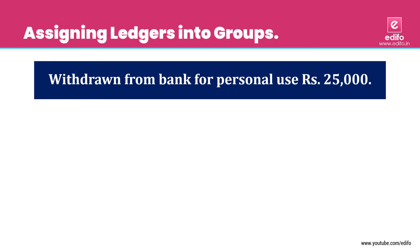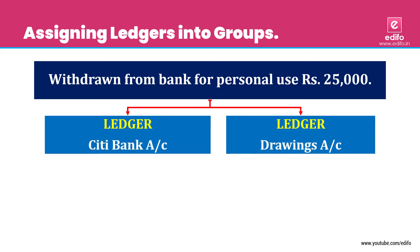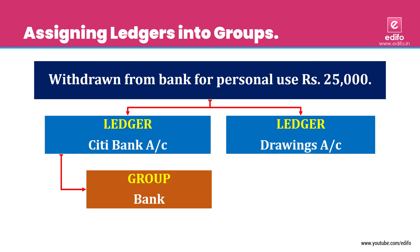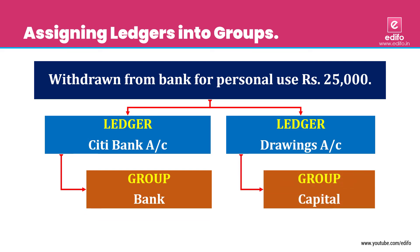Next transaction: withdrawn from bank for personal use. This withdrawal is for personal use, not office use. In accounting, anything withdrawn for personal use is treated as drawings — personal drawings. Two aspects: Citibank account and drawings account. Citibank belongs to 'Bank' group and drawings account falls under the 'Capital' group. All drawings should be under capital.